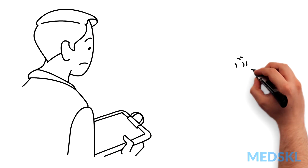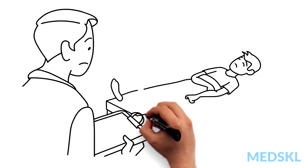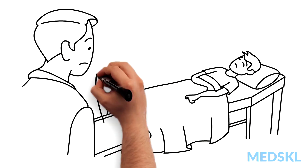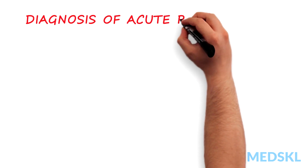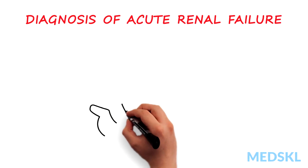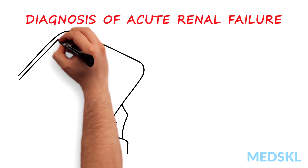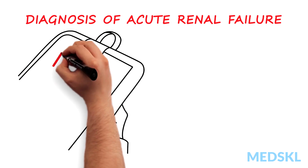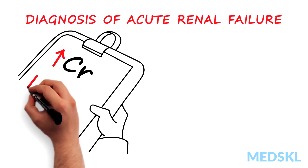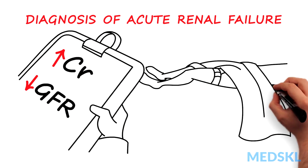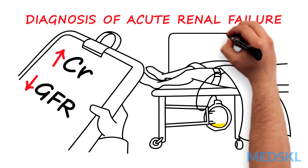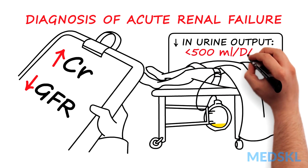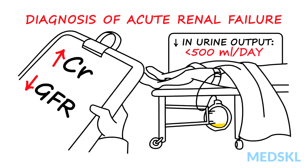What do you do when a serum creatinine value from a patient you see in the ER is elevated? Diagnosis of ARF usually requires an acute rise in serum creatinine representing a fall in GFR, often with a decrease in urine output to less than 500 mL per day.